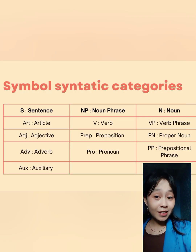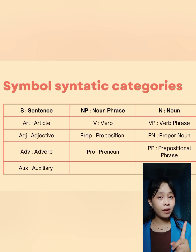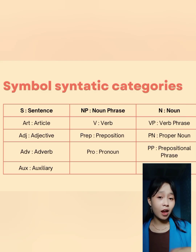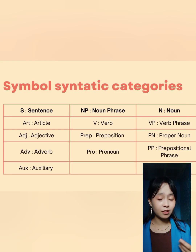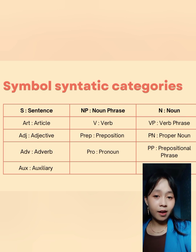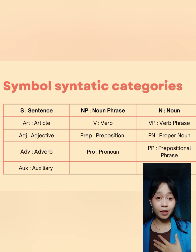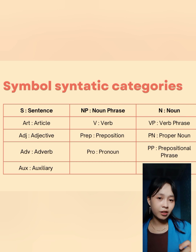In syntax, there are symbols and structure. First, symbols. The symbols used as abbreviations for syntactic categories are: S for sentence, NP for noun phrase, N for noun, and Art for article.